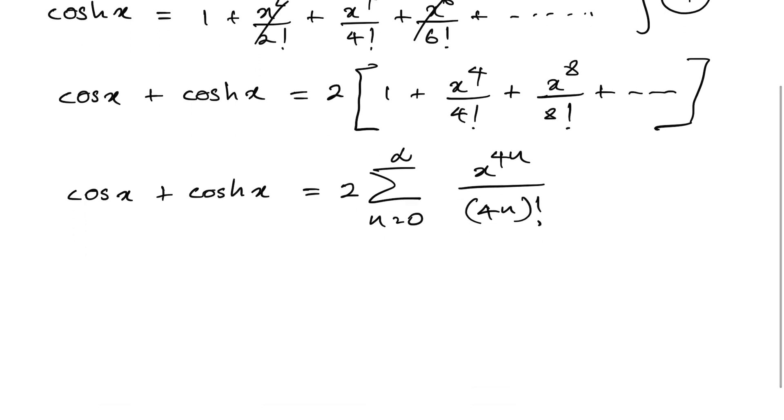Then instead of x I am going to plug in 1. So we have cosine of 1 plus hyperbolic cosine of 1. This 2 we can write here is equal to sum of n equals 0 to infinity 1 over 4 times n factorial.